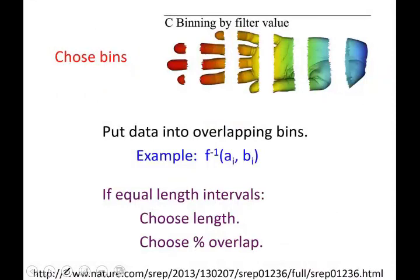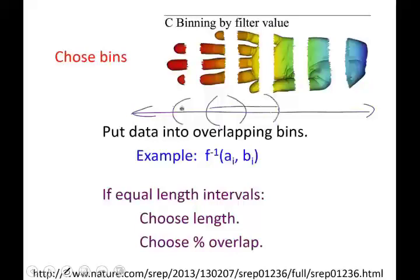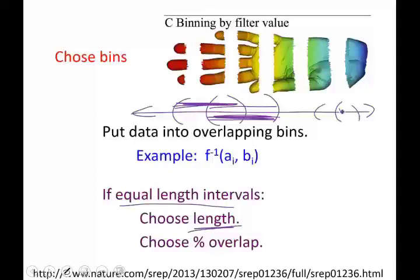One then has to choose bins. If you took a function to the real line, we can cover it with overlapping intervals. We could decide to use equal lengths — that's fairly standard. But even if this interval is the same length as another, we still need to know the length of the interval, as well as whether we have a small overlap or a large overlap between the intervals — that is, the percent overlap. So there are choices there to be made.